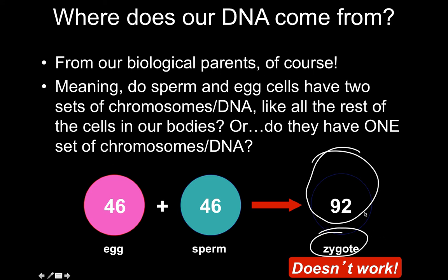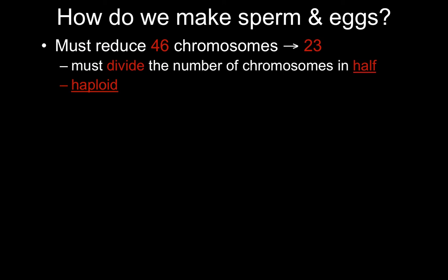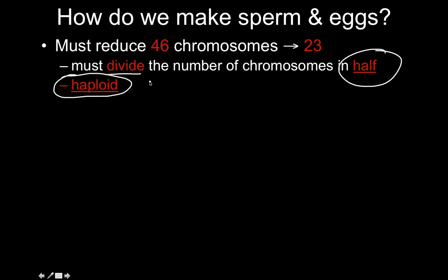We need something else going on so we don't end up with 92 chromosomes in a zygote. Chromosomal abnormalities are bad because usually an extra chromosome or extra DNA causes a fatal flaw in development. So we have to fix this: the egg and sperm can't have the same number of chromosomes as normal cells. We need to reduce 46 chromosomes to 23 — divide the number in half — and make haploid cells with only one copy of each chromosome.